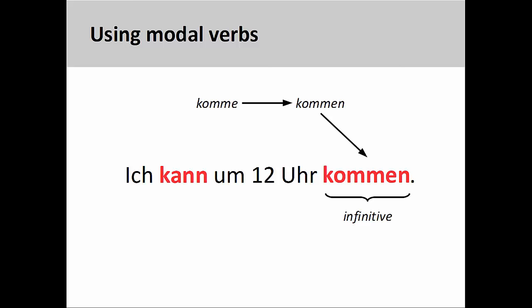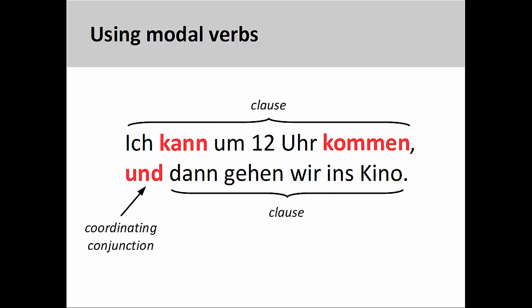'Ich kann um zwölf Uhr kommen' — 'I can come at 12 o'clock' — or, as you see here, at the end of a clause: 'Ich kann um zwölf Uhr kommen und dann gehen wir ins Kino' — 'I can come at 12 o'clock and then we'll go to the movies.' We will examine coordinating conjunctions and clauses in a later presentation.